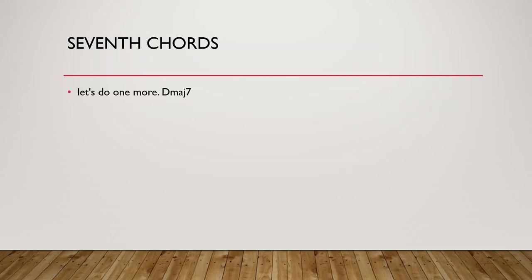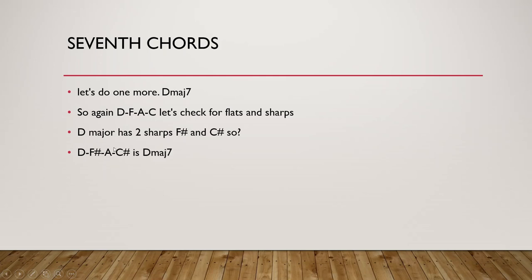One more: D major 7th. Using 1, 3, 5, 7 — D, E, F, G, A, B, C — we get D, F, A, C. Now we check: D major has 2 sharps, which is F sharp and C sharp. We have both an F and a C, so D major 7 will be D, F sharp, A, C sharp. The formula for major 7th is just 1, 3, 5, and 7 — and we check with each note that it is in the major scale.